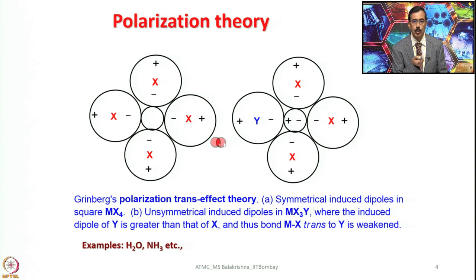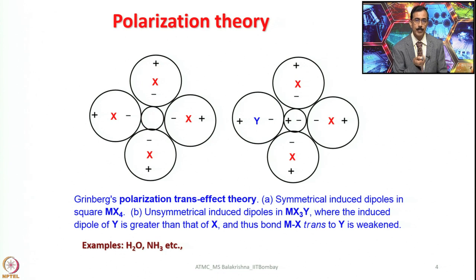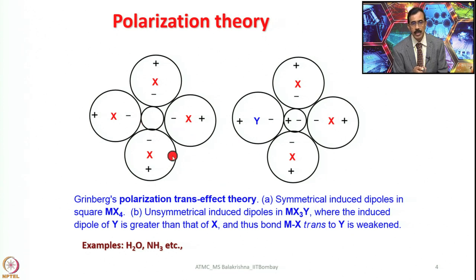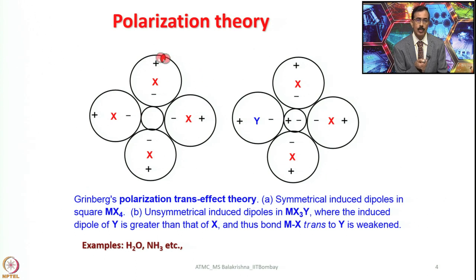Here I have shown two diagrams, A and B. Diagram A represents symmetrical induced dipoles in a square planar complex of the type MX4 — all ligands are symmetrical and we see symmetrical induced dipoles. If they are neutral ligands with a cationic metal, according to crystal field theory, the interaction is ion-dipolar. If we consider four ligands which are symmetric, then the induced dipoles will be symmetric in all four directions. In that case, there is no preferred elimination of any one ligand — any ligand can go during substitution reaction.